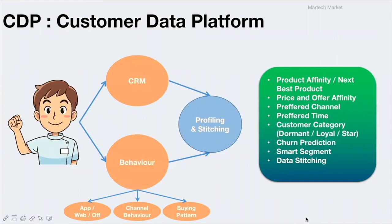We can also determine customer category — whether a customer is dormant, loyal, or a star customer — and predict where they'll fall over time. Based on current behavior, the system predicts whether a customer could become loyal or a star, or we can predict churn based on certain behavioral patterns by mapping behavior to users who have previously churned. This allows us to create smart segments for smarter communication.